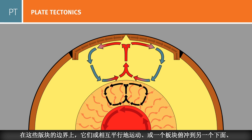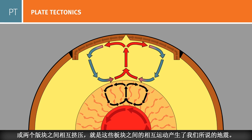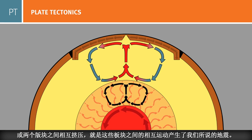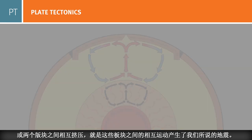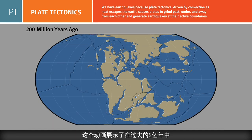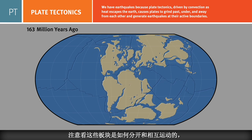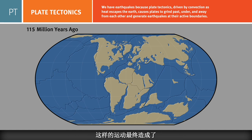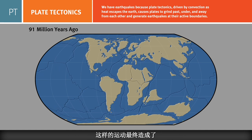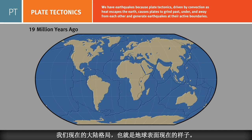Earthquakes rupture the active boundaries of these plates as they grind past, under, and away from each other. This simulation shows the last 200 million years of global plate tectonic motions. Notice how the plates break apart and move about, eventually arranging themselves into the continents as we recognize them today.